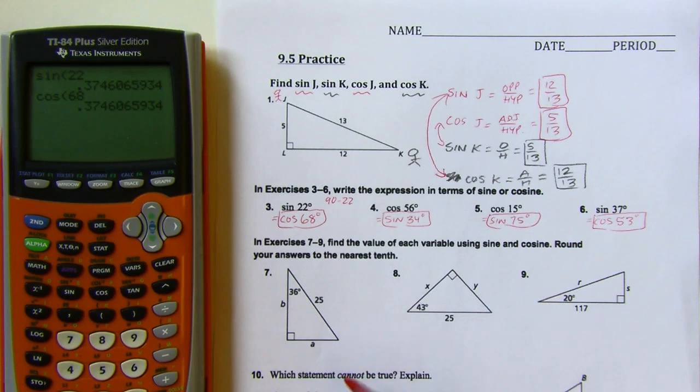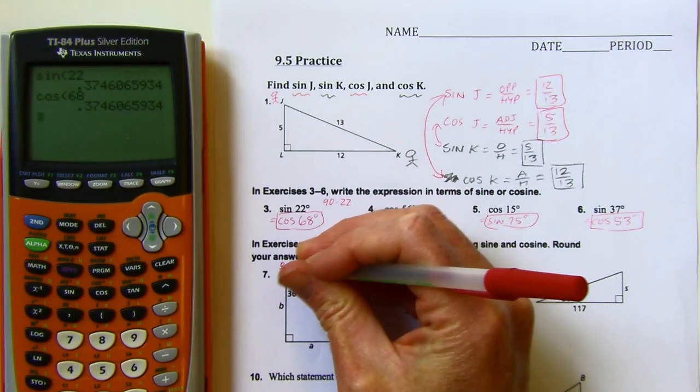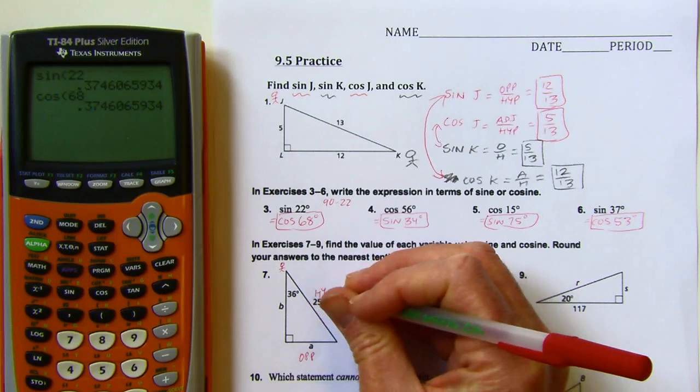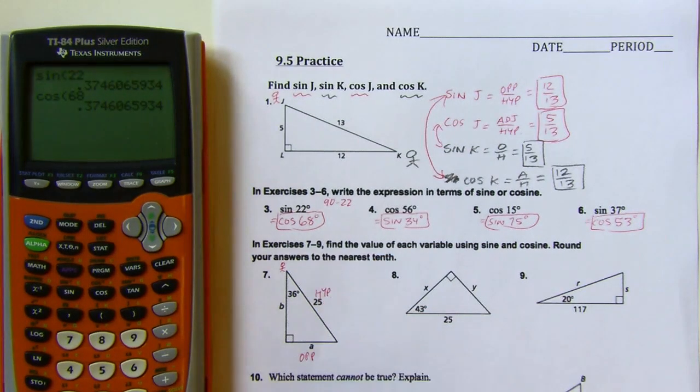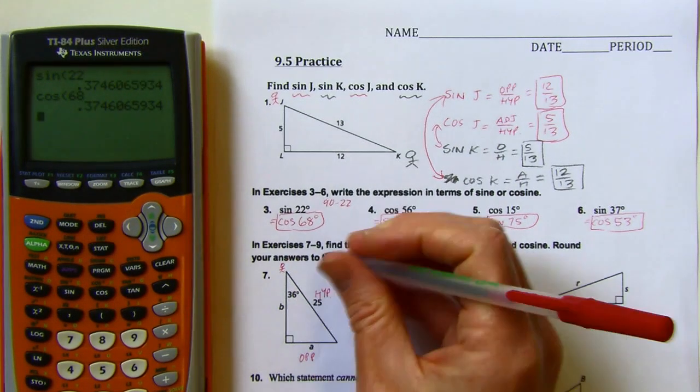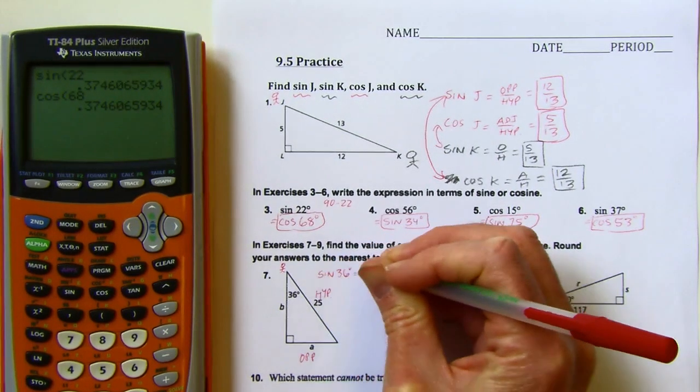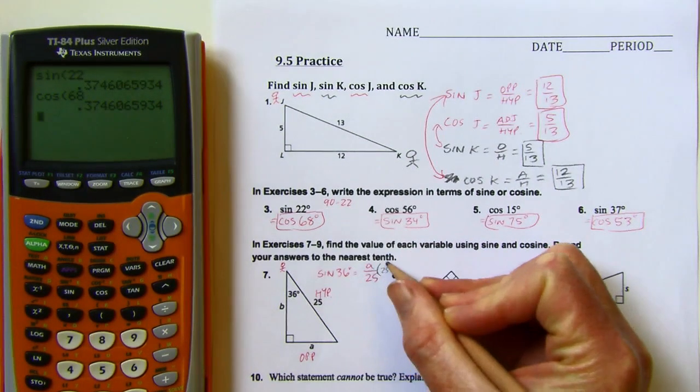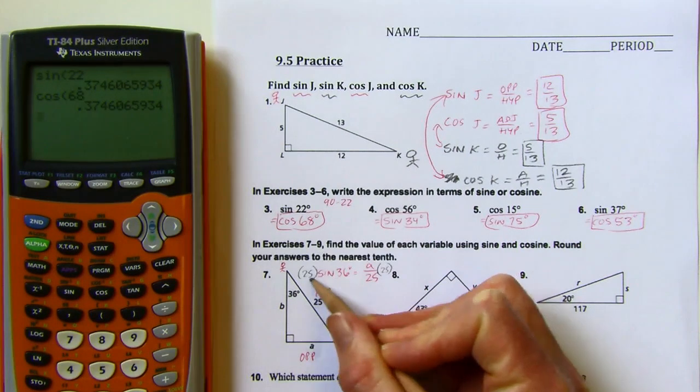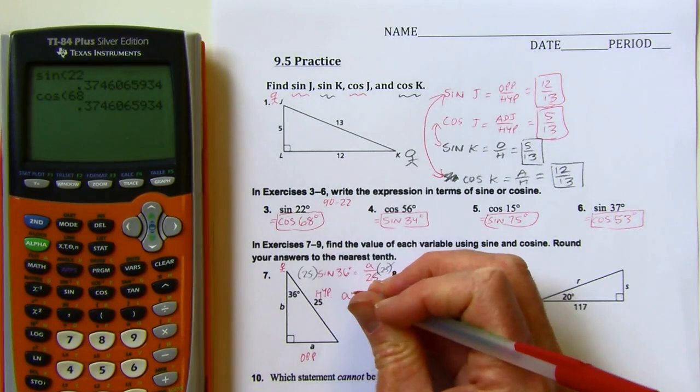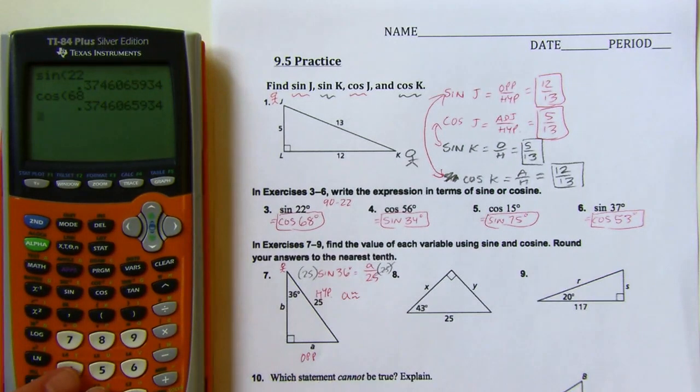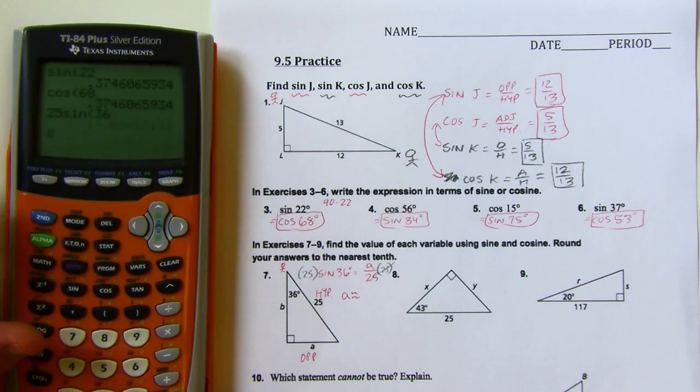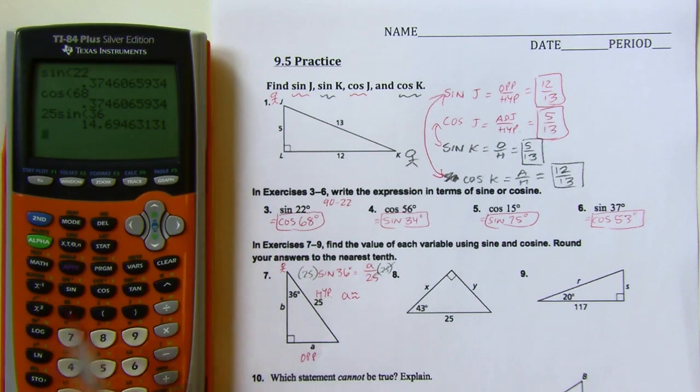All right, so I want to find, let's find a first. So I want to be at the acute angle that is marked. So when I'm looking, say I want a, well, a is the opposite here. And then I'll use the hypotenuse, because I know what that is. So I'm going to say the sine of 36 degrees equals a over 25. And then to get the a by itself, I'll just multiply both sides by 25. So a is going to equal 25 times sine 36 degrees. Put that into my calculator. You might need to do sine 36 first and then multiply by 25, depending on your calculator. And it's to the nearest tenth, so 14.7.